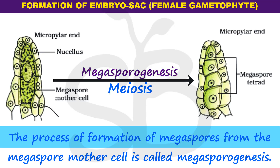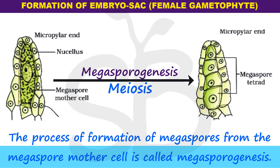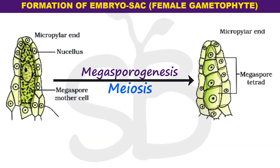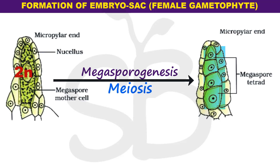Megasporogenesis means the process of formation of megaspores from the megaspore mother cell is called Megasporogenesis. The megaspore mother cell undergoes meiosis — it is a diploid cell.